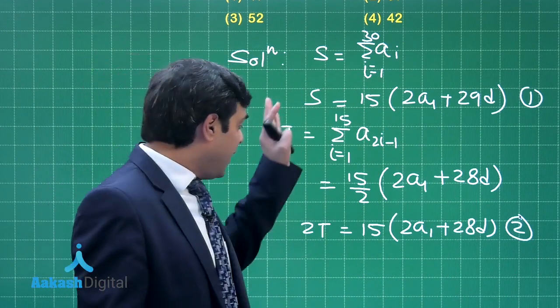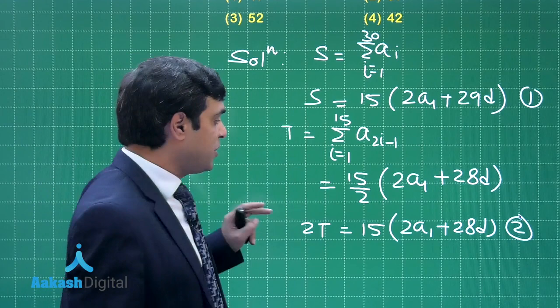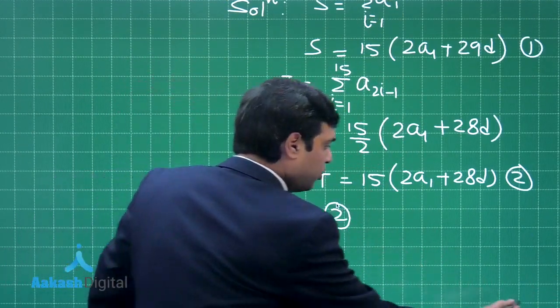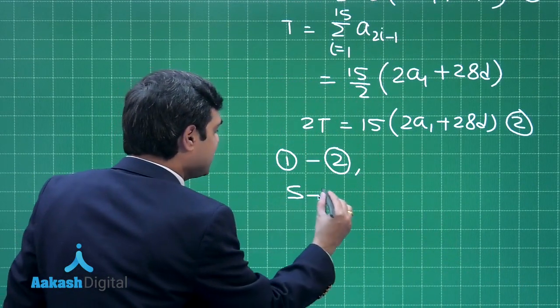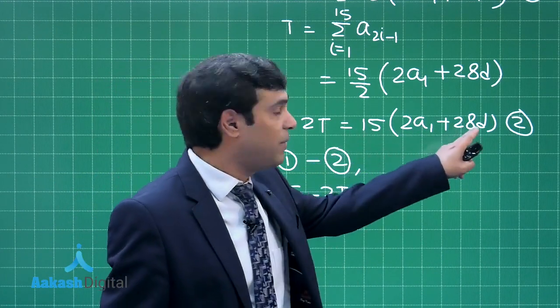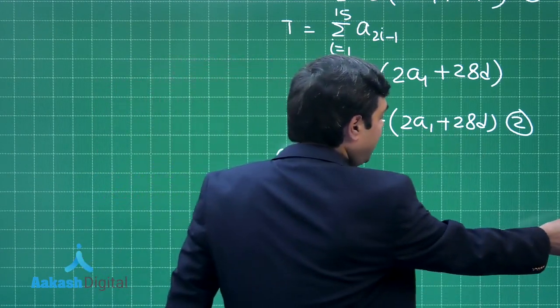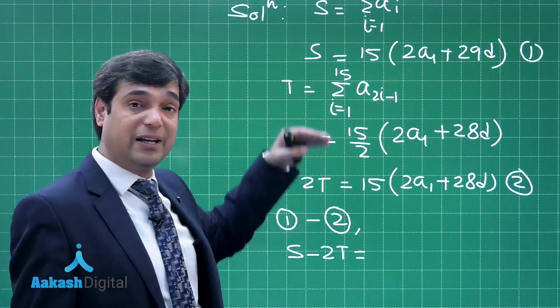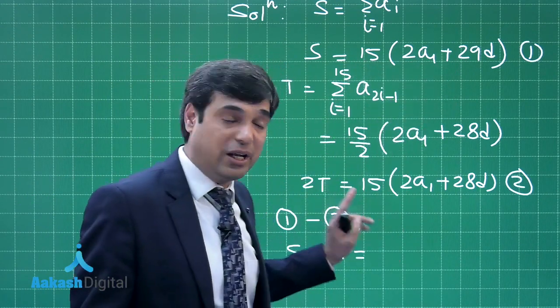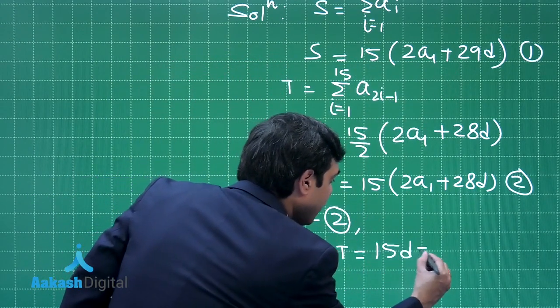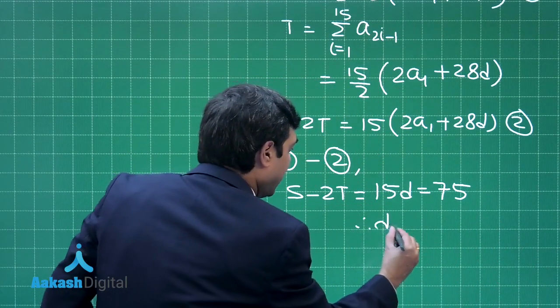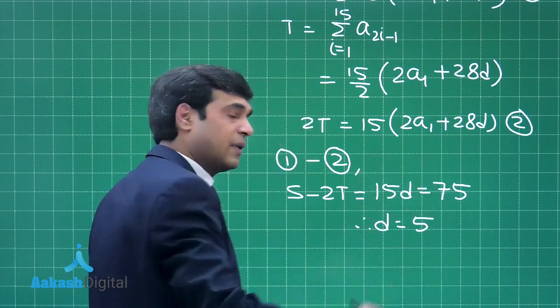Now, it is given S - 2T is 75. Just apply equation 1 minus equation 2. This is giving us S - 2T = 15 into (2a₁ + 29d) minus 15 into (2a₁ + 28d). On subtracting, 2a₁ is cancelled, you are left with 15 into d. So this is equal to 15d, which is 75. This gives us d as 5. I'm sure this is clear.